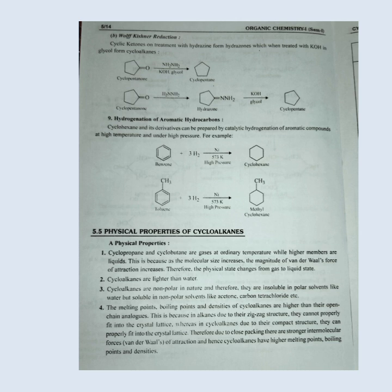Wolff-Kishner reduction: Cyclic ketones on treatment with hydrazine form hydrazones, which, when treated with KOH in glycol, form cycloalkanes. Hydrogenation of aromatic hydrocarbons: Cyclohexane and its derivatives can be prepared by catalytic hydrogenation of aromatic compounds at high temperature and high pressure.